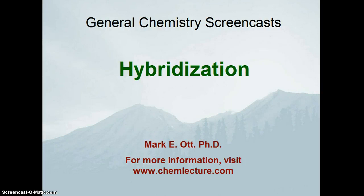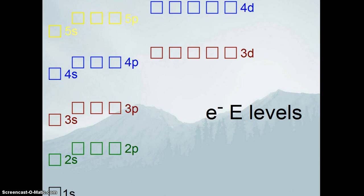In this screencast, we're going to talk about hybridization. Hybridization is an explanation of where we get these funny shapes. We have a generic energy level diagram, sometimes referred to as a Plinko board, which shows where the electrons are. The lowest orbital is a 1s orbital, then the next lowest energy orbital is a 2s, followed by 2p, 3s, 3p. We learned this when we were talking about electronic configurations.